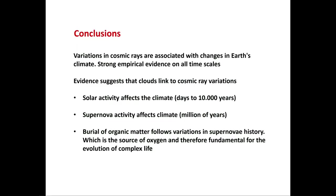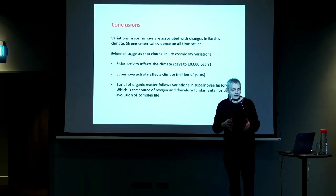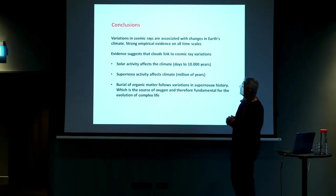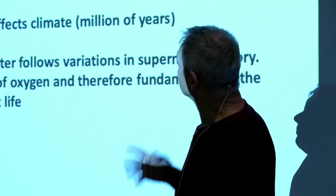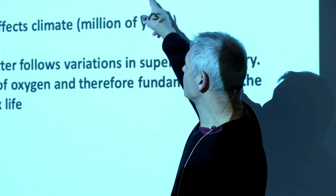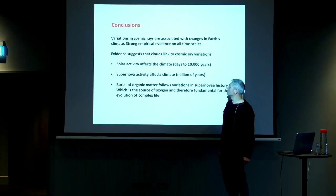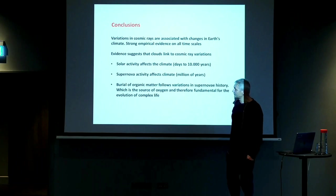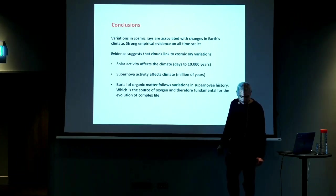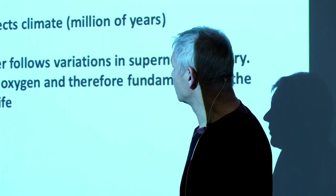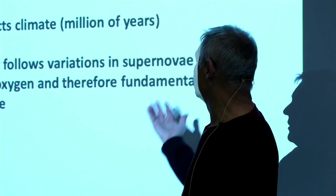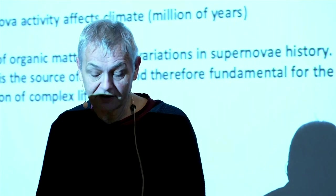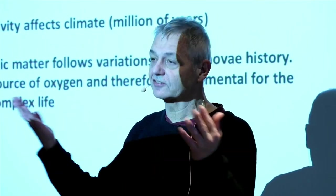Let me just conclude. I have been arguing that variations in cosmic rays seem to be related to changes in climate, and we have a lot of evidence indicating this could be true. The link has to do with clouds — the cosmic ray-cloud link. We saw that solar activity seems to affect climate from days down to 10,000 years, then supernova activity over millions of years, and these changes are so large that they affect the conditions life has had over the whole history of our solar system. It was also connected to oxygen. Thank you.